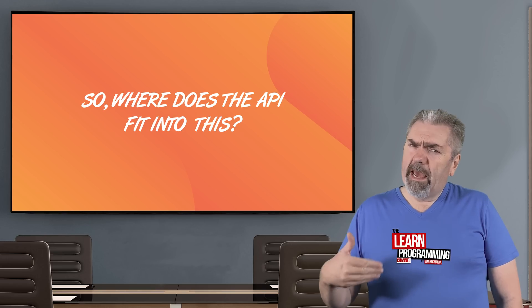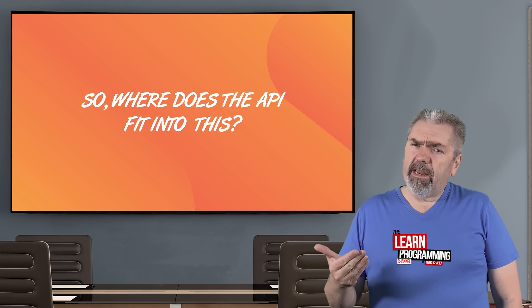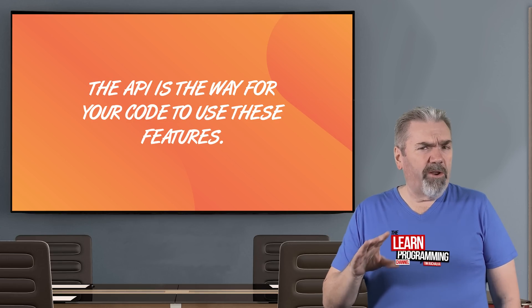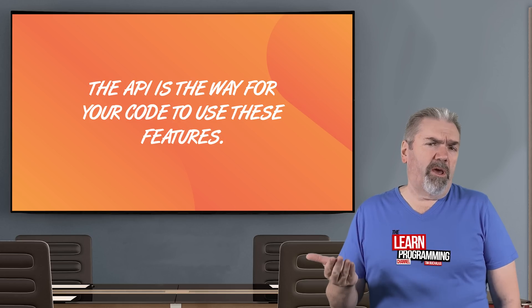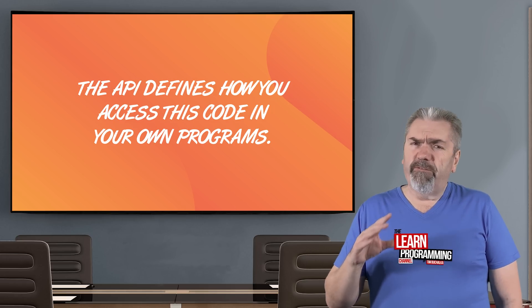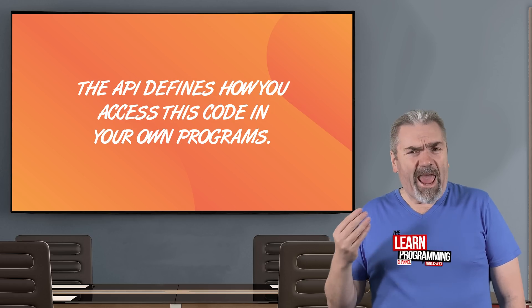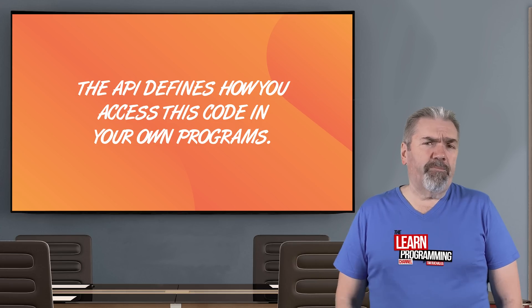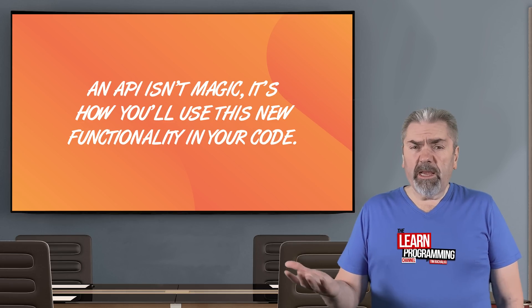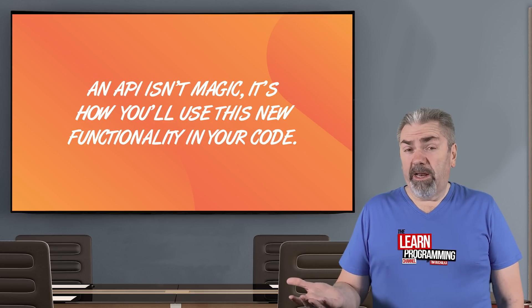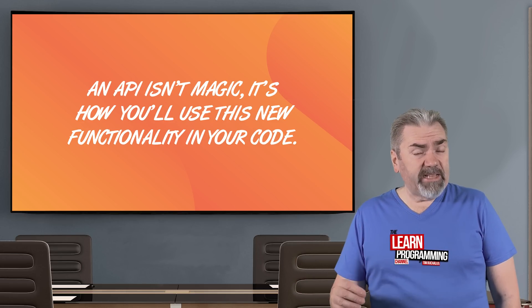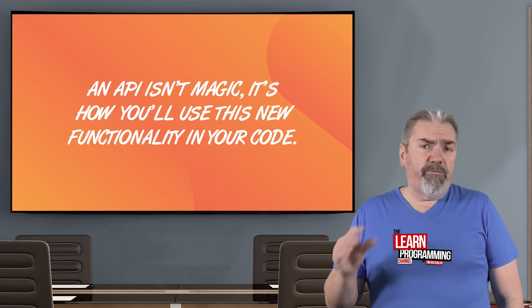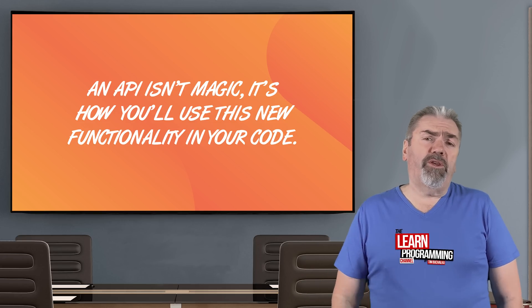So with that said, where does the API come into this again? Well, the API is the way for your code to use this pre-written code. So it defines how you can access the specific functionality in your own programs. There's nothing really magical about it — it's really just a way for you to be able to access this pre-written code from the code that you develop yourself.